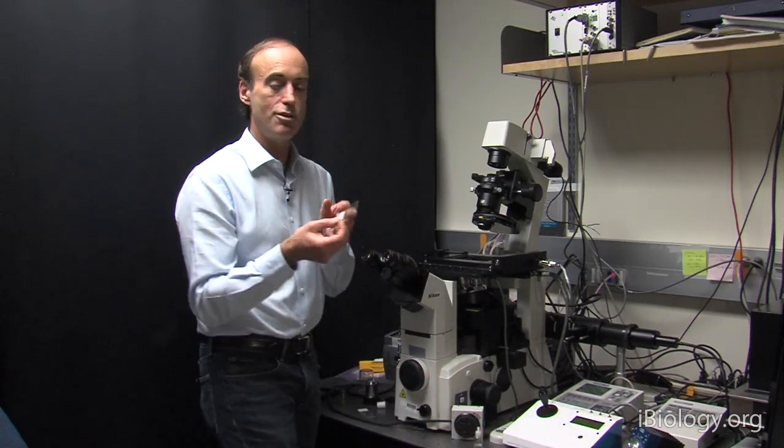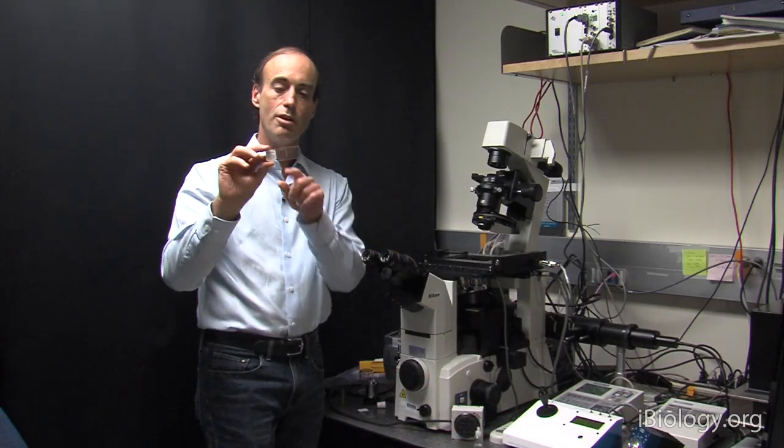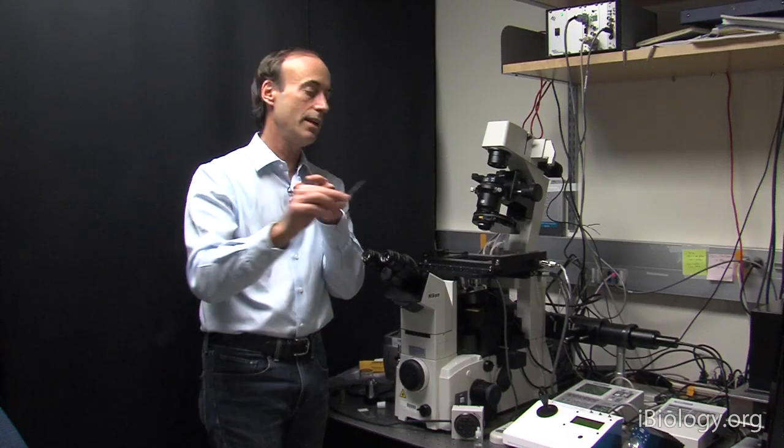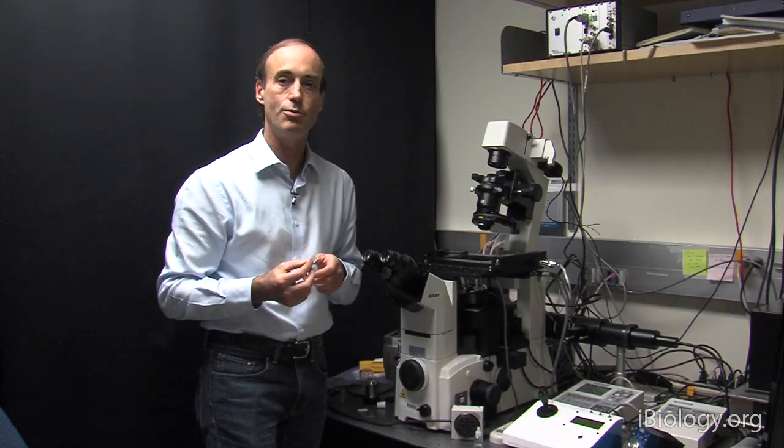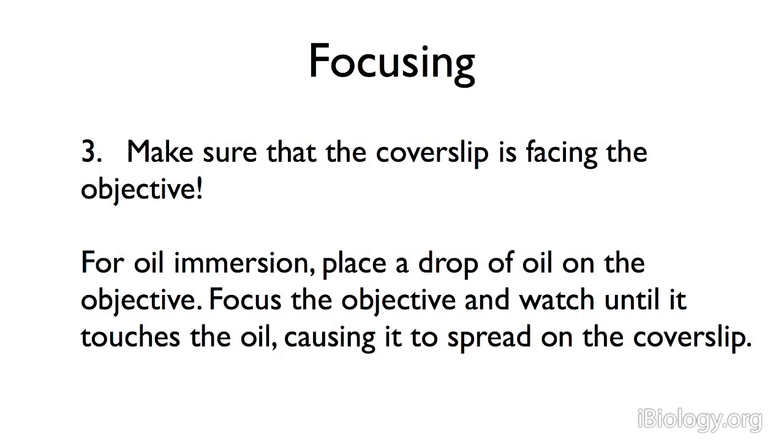Next, look at your specimen. Make sure that you put the coverslip side down onto the objective. If you're using oil, you just need one drop of oil placed on top of the objective lens, making sure not to touch it directly.